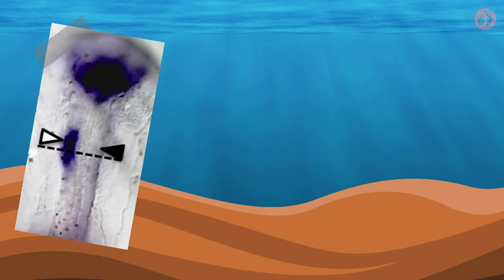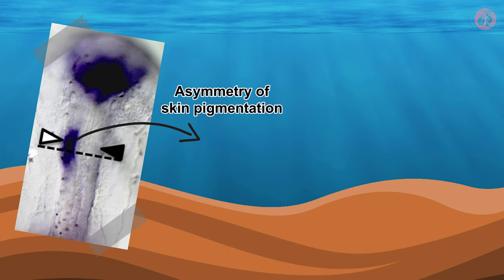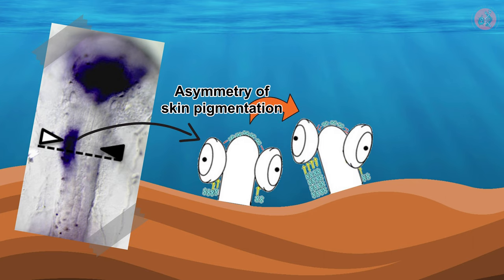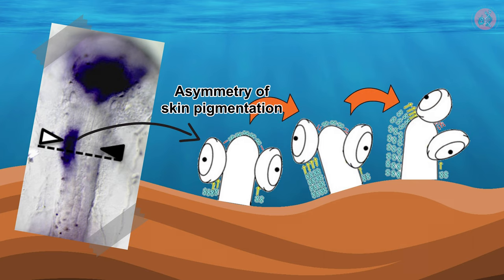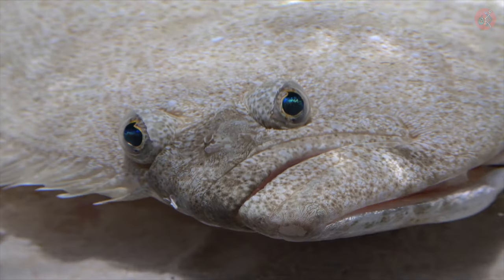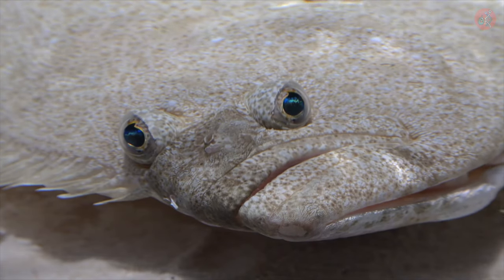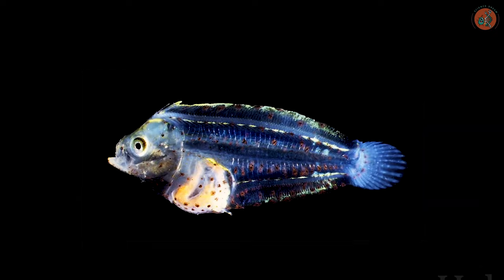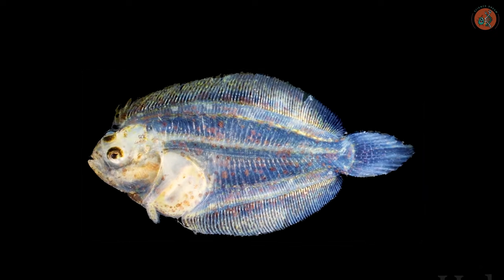Recently, studies have surfaced explaining the mechanism from a molecular perspective, where the asymmetrical pigment expression in flounder embryo skin influences cell formation around the eyes, gradually causing one eye to shift to the opposite side. Isn't it remarkable to discover such a rich evolutionary tale hidden within the ordinary flounder?